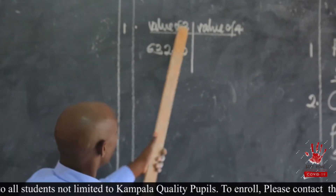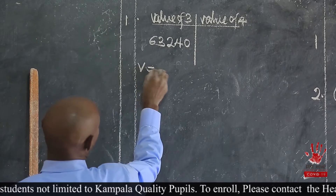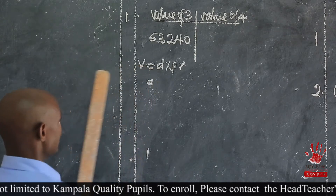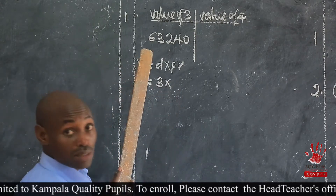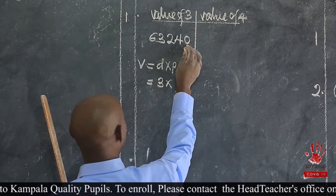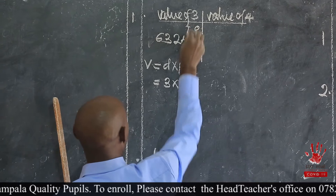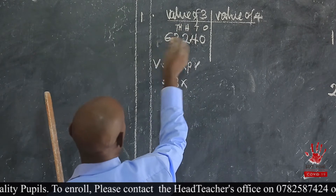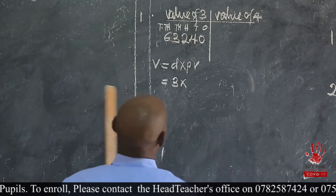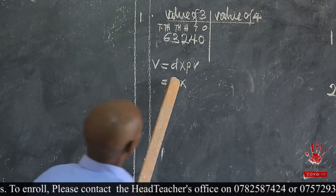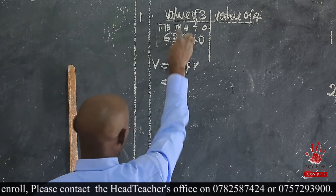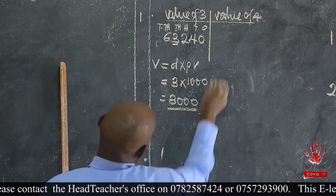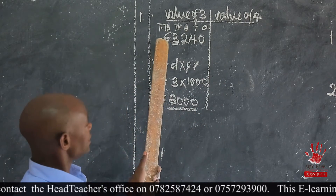How do we get a value? Remember, value is equal to digit times the place value. So for this case, what is the digit? The digit is 3. What is its place value? We begin from our right. The first digit: ones. The second: tens. The next: hundreds. The next: thousands. Then the last one is 10,000. So the digit is 3, and the place value of 3 is thousands. We multiply by 1,000 and we get 3,000. So the value of 3 is 3,000.